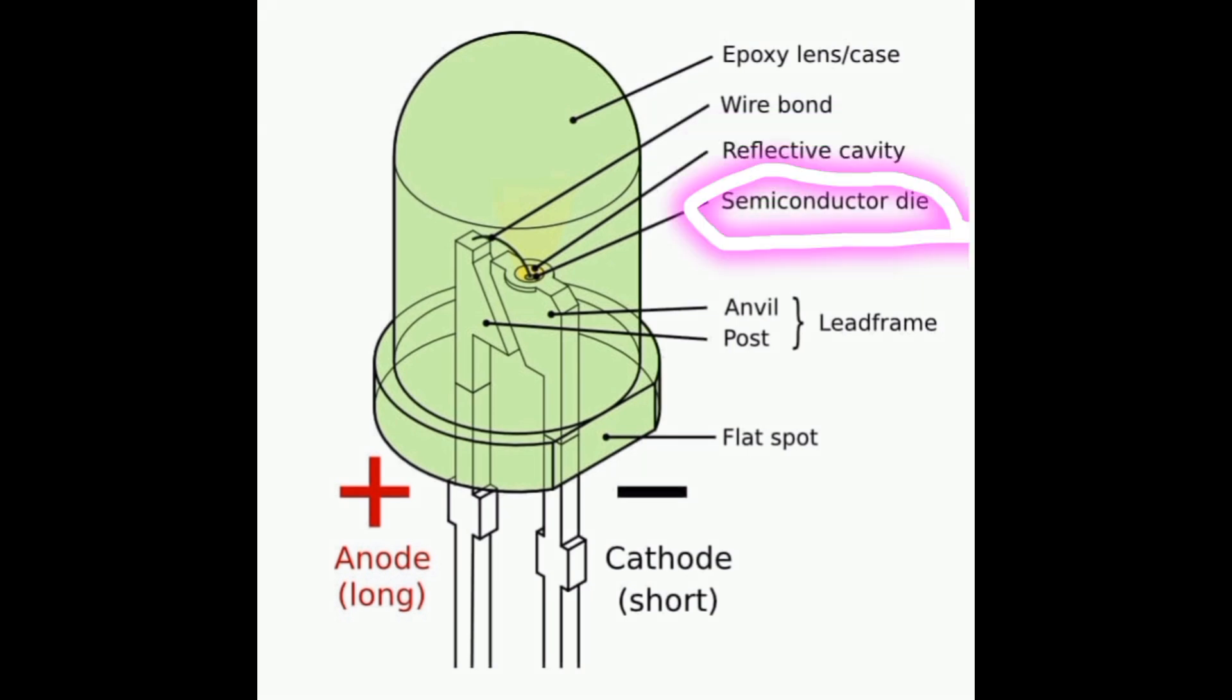Semiconductor diode. This allows current to flow in one direction, which causes electrons holes, resulting in the emission of photons and production of light. Anvil and post are structural components that help to support the LED chip and provide mechanical stability of the LED package.